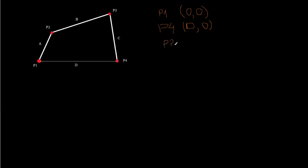P2 is equal to — let's say this angle here is equal to theta — so P2 has the x coordinate equal to A cosine theta, and the y coordinate equal to A sine theta. We know theta.